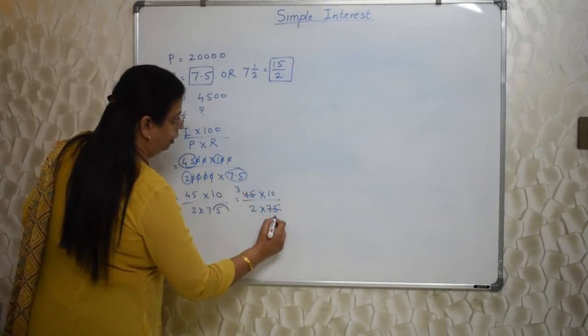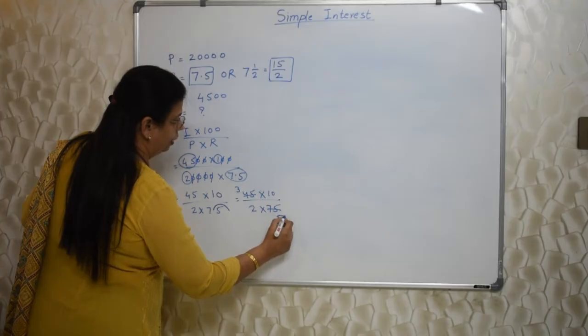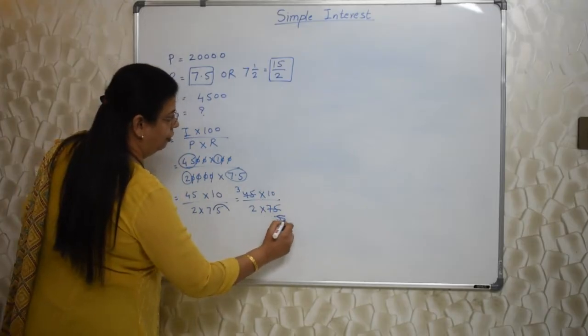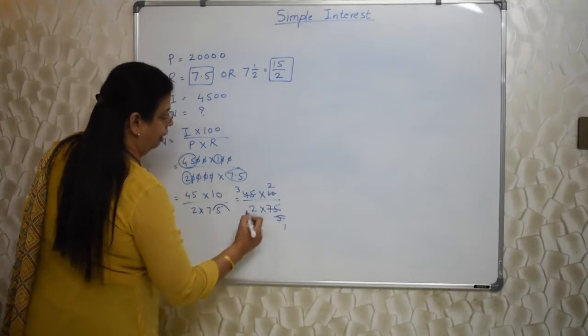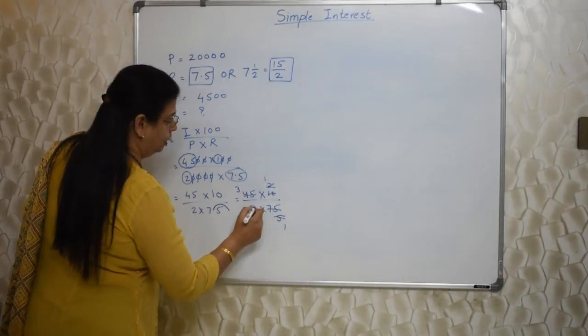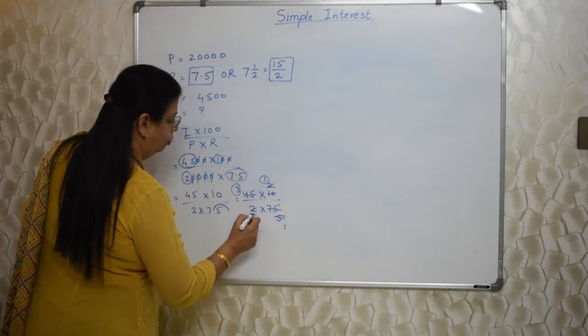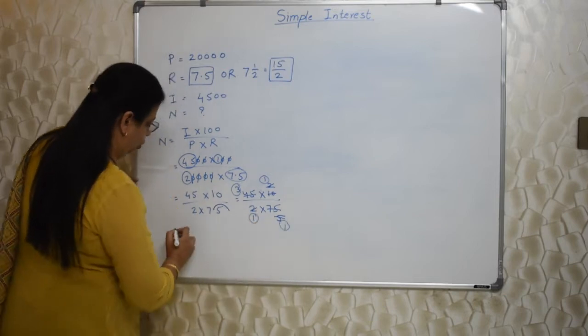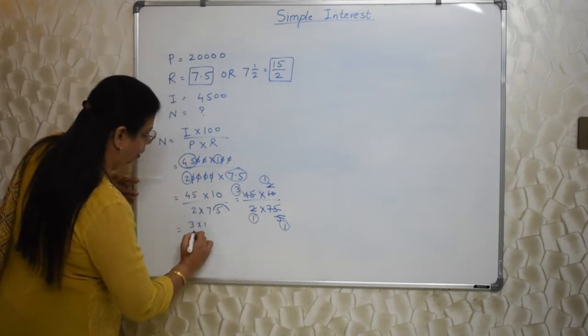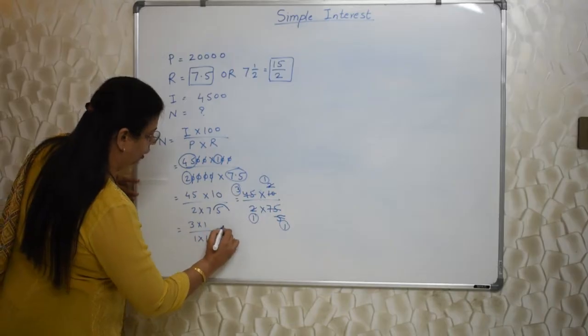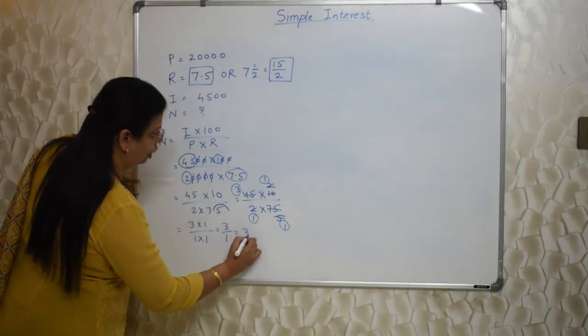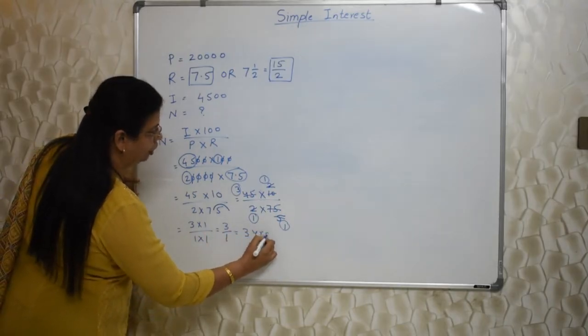Fifteen threes are, fifteen fives are. Then five ones are, five twos are ten. Then this two ones are two, two ones are two. So what is remaining? Three, one, one, one. So three into one upon one into one. That is three upon one means three. So answer is three years.